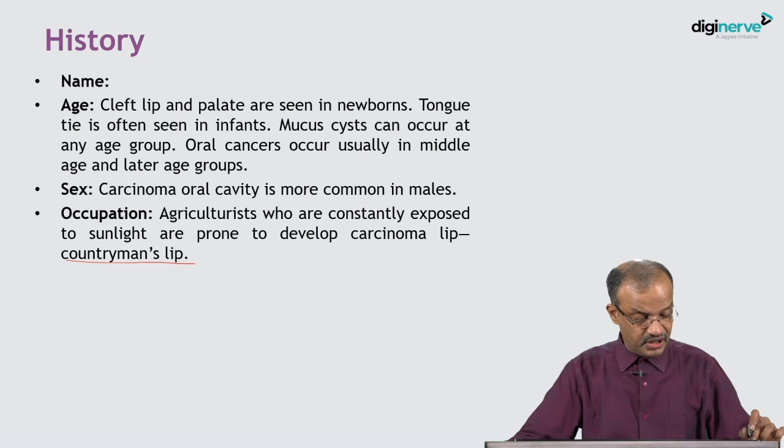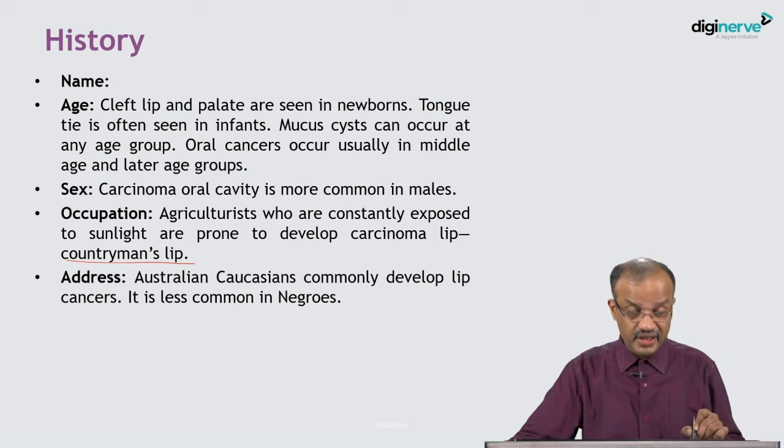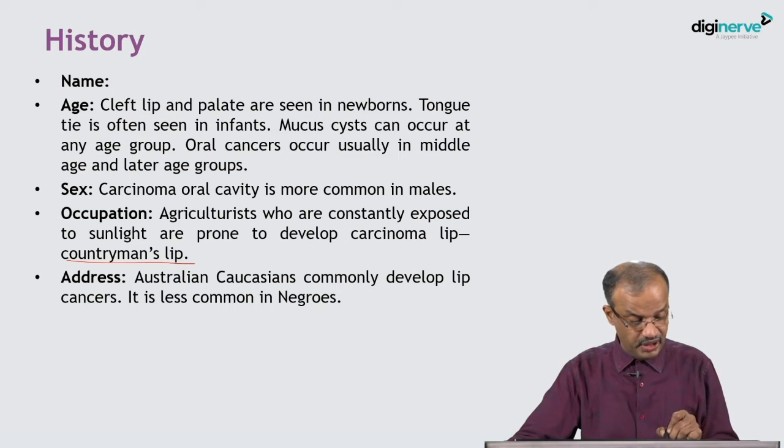This is called the countryman's lip or agriculturalist's lip, involving the lower lip, likely due to sun exposure. Carcinoma of the lip always has a better prognosis compared to tongue, floor of the mouth, buccal mucosa, and palate. Lip has a very good prognosis and recovery rate. Tongue and floor of the mouth cancers have poor prognosis. This lip cancer is also noted in Australian Caucasians.